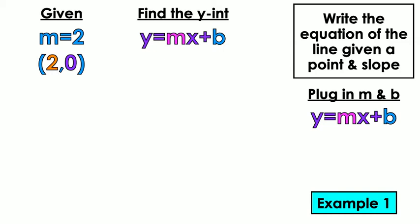So we're going to find the y-intercept. The first thing that we're going to do is plug in M. We're going to choose X and Y. 2 is X, 0 is Y. So in our equation, instead of Y, I'm going to put a 0.